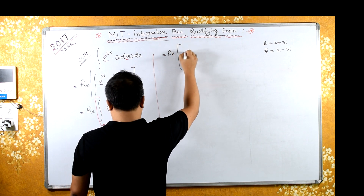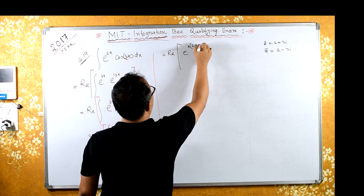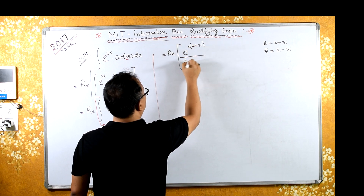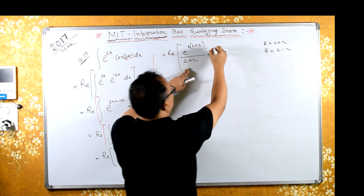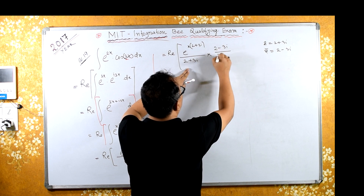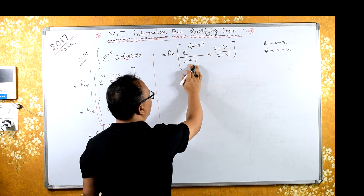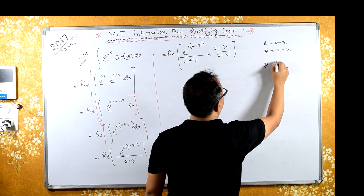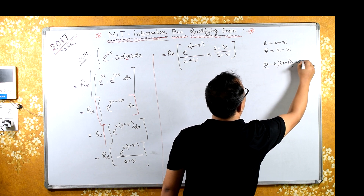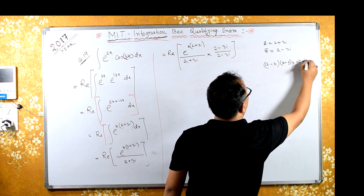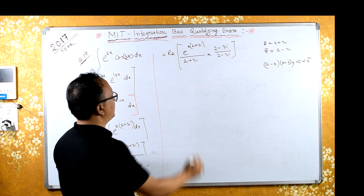So we have the real part of e^((2+3i)x) divided by (2 + 3i), multiplied by (2 minus 3i) over (2 minus 3i). In the denominator, (a minus b)(a plus b) equals a squared minus b squared.